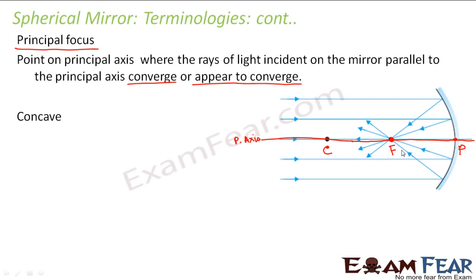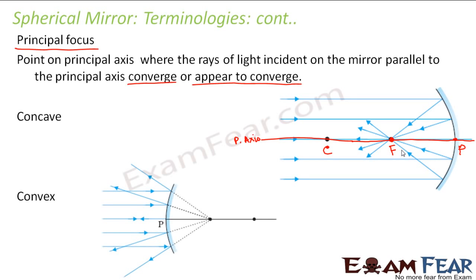In the case of a convex mirror, the rays of light parallel to the principal axis, after reflection, get diverged. They do not actually converge. But if you virtually extrapolate these reflected rays, they appear to converge at a point behind the mirror. So this point is the principal focus for a convex mirror — a virtual focus. In summary, for a concave mirror the principal focus is where rays actually converge, while for a convex mirror rays only appear to converge there.